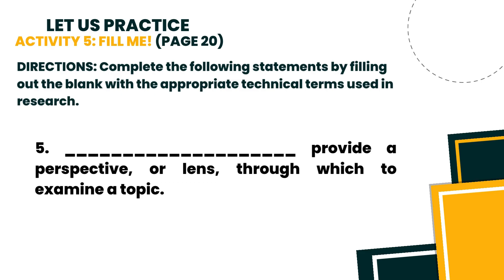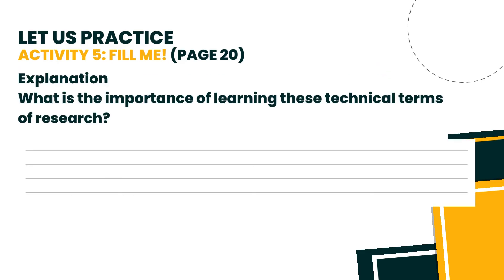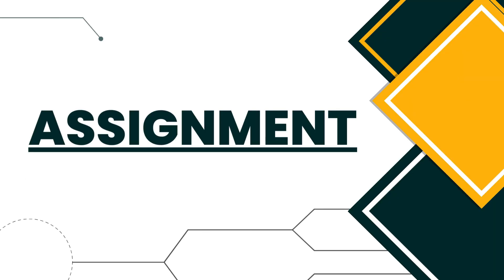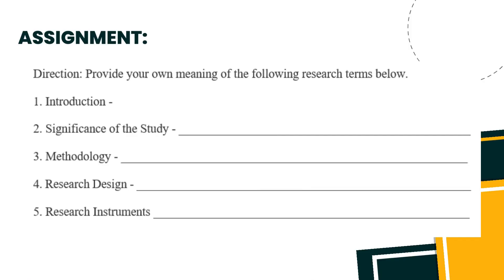For the explanation, answer this question: What is the importance of learning these technical terms of research? You may attach your answers on the Google Forms provided to your respective GCs. Now, let's proceed to your assignment. Provide your own meaning on the following research terms below. You may pass your answers on the Google Classroom.